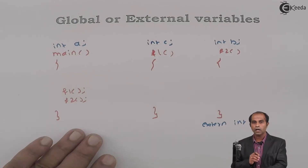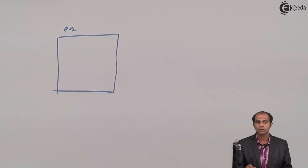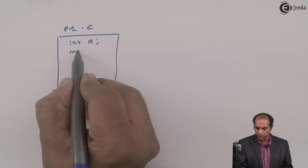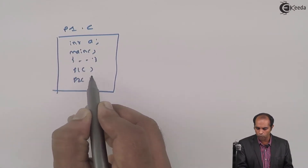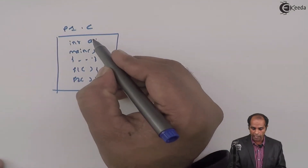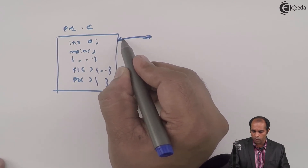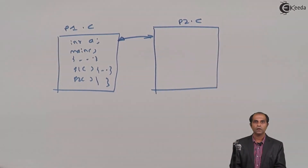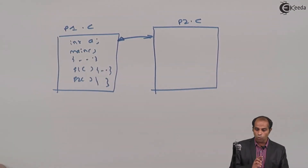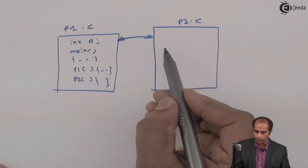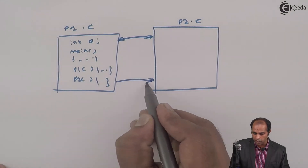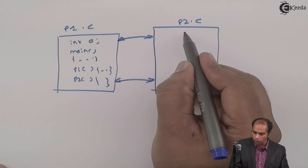In a single-file environment you'll never be able to experience the extern keyword fully, so let's look at it in a multi-file programming environment. Assume I have a program p1.c with int a declared globally, along with main, f1, and f2. Now let's link p1.c with another file called p2.c. This p2.c is not an independent program — it is part of the project linked with p1.c, and some functions in p2.c want to use the same variable a.